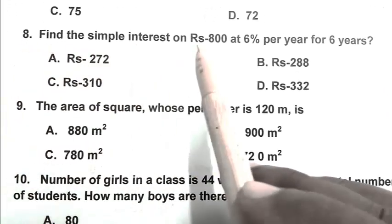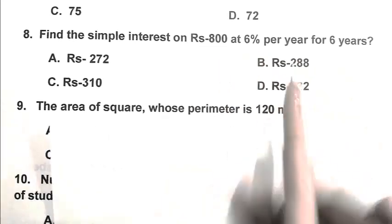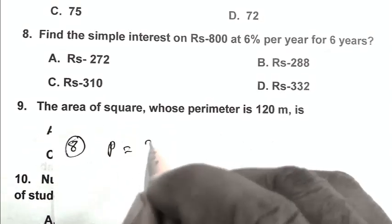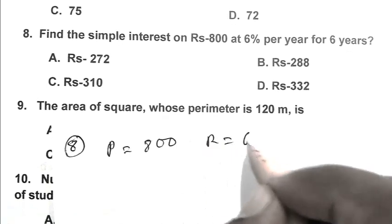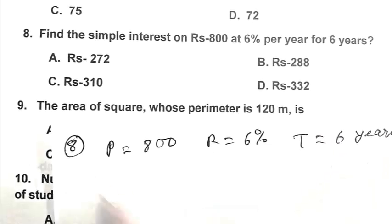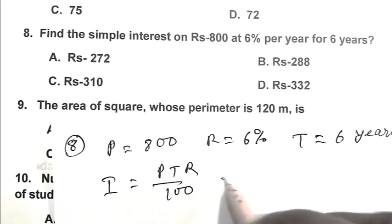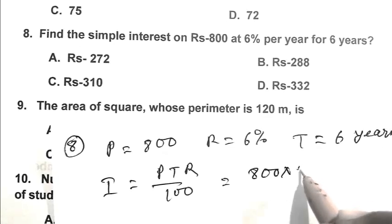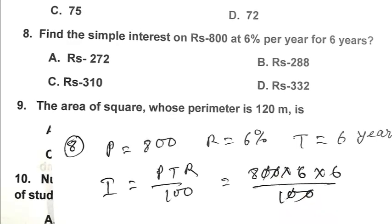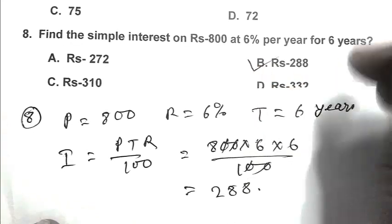Question number 8: Find the simple interest on rupees 800 at 6 percent per year for 6 years. Principal is 800, rate is 6%, and time is 6 years. Interest equals P×T×R upon 100, that is 800 multiplied by 6 multiplied by 6 upon 100, which equals 288. So B is the right answer.